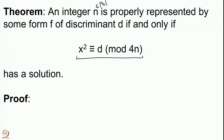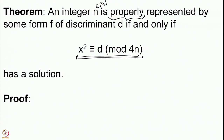So we will understand this thing quite well: when a certain d is a square modulo 4n, this is equivalent to some form of discriminant d representing n properly. So we have some pair of integers p, r which are coprime and f(p, r) = n. This is the statement that the integer n is properly represented by some form.